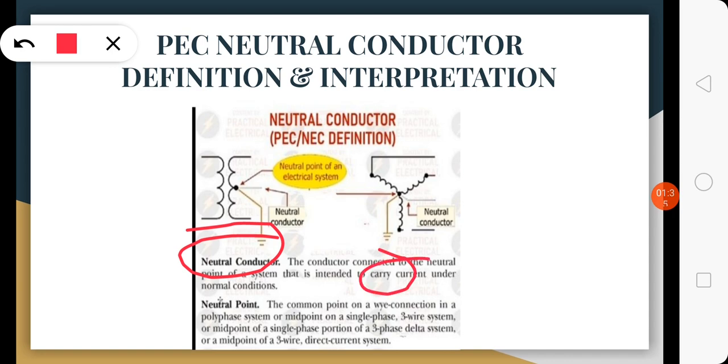The neutral conductor definition is: the conductor connected to the neutral point of the system that is intended to carry current under normal conditions. You can see this neutral in the single phase three-wire system, the four-wire Y configuration, and also in the three-phase delta system. The neutral conductor is connected in the midpoint as per definition of the PEC. We will discuss the grounded conductor in the next slides.